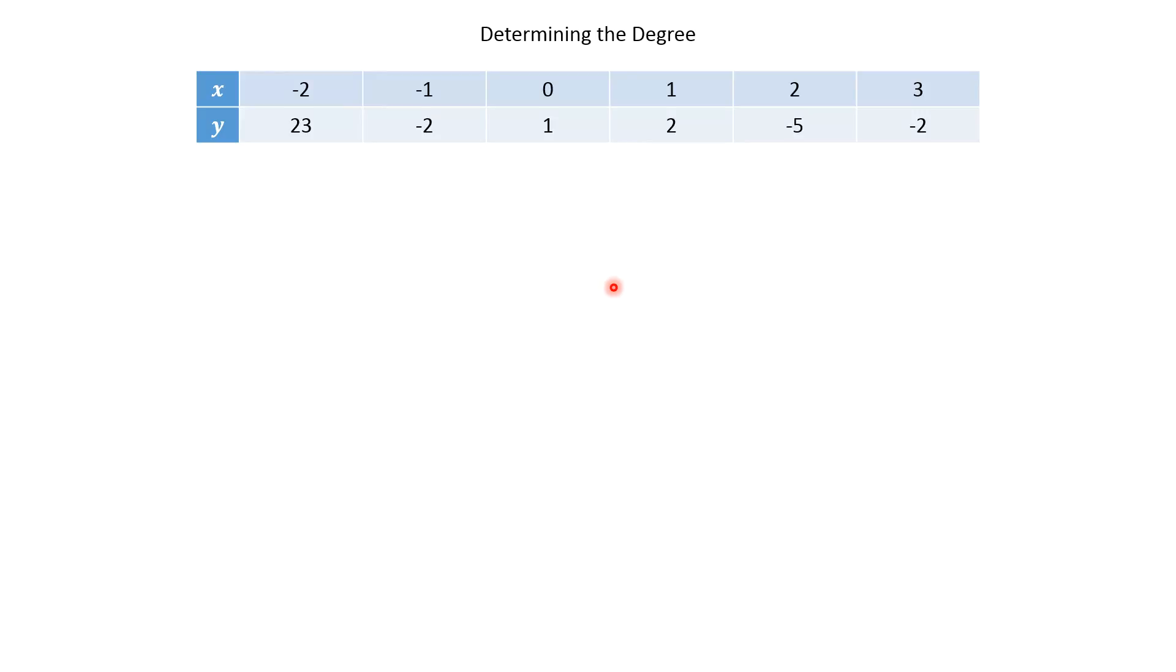The first thing we're going to find is the first difference. And this is something we've been doing since chapter two. So the first difference, to get from 23 to negative 2, we subtract 25. To get from negative 2 to 1, we add 3. From 1 to 2, we add 1. From 2 to negative 5, we subtract 7. And from negative 5 to negative 2, we add 3. And those are our first differences.